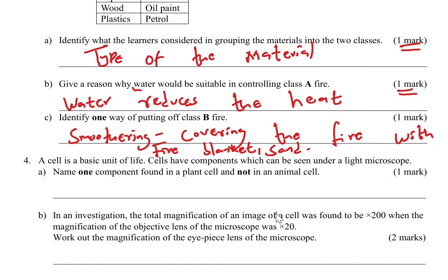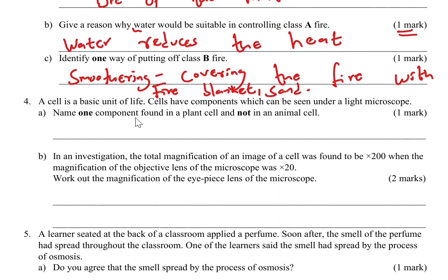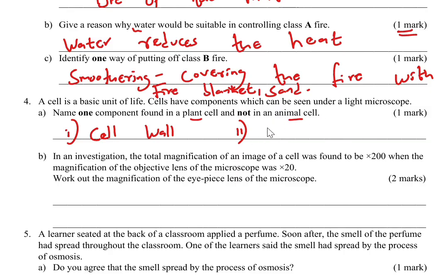Question 4: a cell is a basic unit of life, and cells have components visible under a light microscope. Name one component found in a plant cell but not in an animal cell. Plant cells have a cell wall — that's one answer. Another is chloroplast: plants make their own food so they need chloroplast, while animals don't make their own food and therefore don't require it. Give either one and you score one mark.